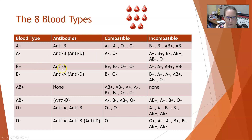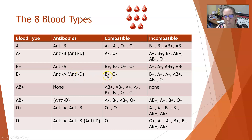B positive patients have anti-A in their serum. You can give them B positive, B negative, O positive, or O negative. You cannot give them anything that has A. B negative patients will have anti-A and potentially anti-D, so you can only give them B negative and O negative. They are incompatible with anything that has an A antigen and also anything that's Rh positive.